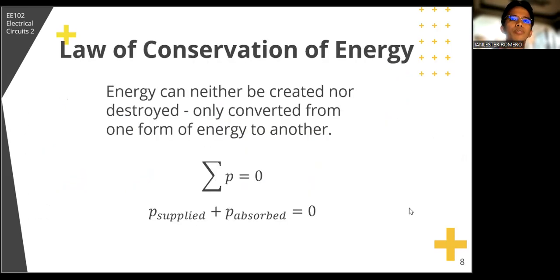Now, the law of conservation of energy states that energy can neither be created nor destroyed. Energy can only be converted from one form of energy to another. So this implies that a system always has the same amount of energy unless it's added from the outside. For this reason, the algebraic sum of power in a circuit at any instant of time must be zero. That is, the summation of our power is equal to zero, which means our power supplied, this is a negative value, and our power absorbed, which is a positive value. If we add that together, it's equal to zero.